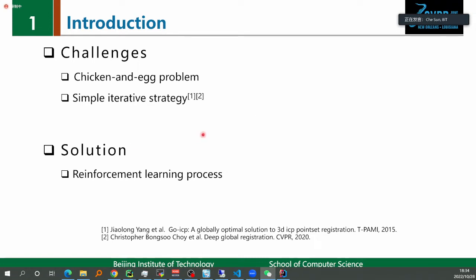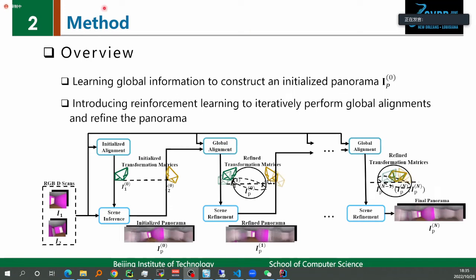To solve the chicken-and-egg problem, we use reinforcement learning to align RGBD scans with the scenes based on both current and future global information. The global information is also iteratively refined in reinforcement learning. Our method learns global information to construct an initialized panorama during scene inference. The panorama provides information for global alignments, and the transformation matrices are computed during alignments. We perform reinforcement learning to iteratively align less overlap scans globally and refine the panorama representations, solving the chicken-and-egg problem in a non-greedy manner.